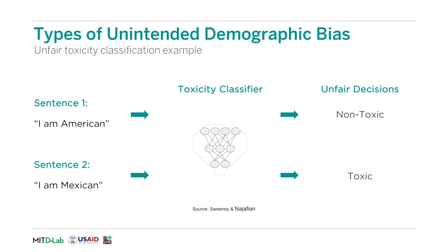This unfairness can be caused by many different artifacts of the natural language processing pipeline. For instance, certain nationalities and ethnic groups are more frequently marginalized, and this is reflected in the language usually associated with them. Therefore, training NLP algorithms on biased datasets could result in a certain form of unintended demographic bias.